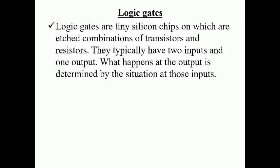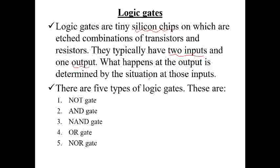Logic gates are tiny silicon chips, most of them produced from silicon, on which each combines transistors and resistors. They typically have two inputs and one output. There is one logic gate which has only one input — that is the NOT gate. We will see what happens to the output determined by the inputs. There are five logic gates; actually three are fundamental: the NOT gate, the AND gate, and the OR gate. The NAND and NOR gates are the inverses of AND and OR gates. Let us see each of them one by one.